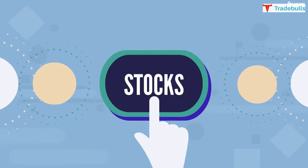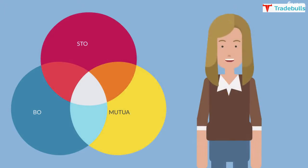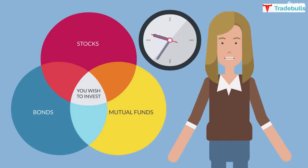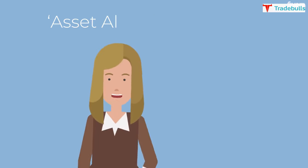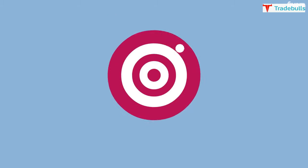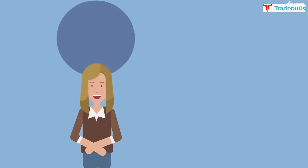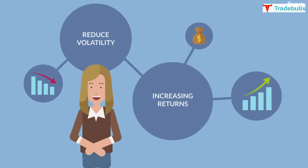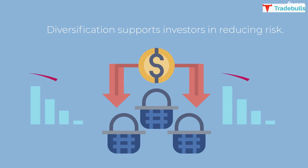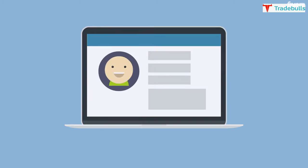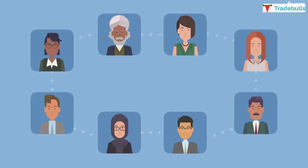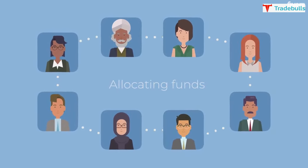Instead of choosing just stocks, decide what mix of stocks, bonds, and mutual funds you wish to invest in over a period of time. And this can only be done through a proper asset allocation strategy. The primary objective of asset allocation is to reduce volatility while increasing returns. Diversification supports investors in reducing risk. The procedure involves determining your risk-return profile and then allocating funds into various asset groups in a predetermined proportion.